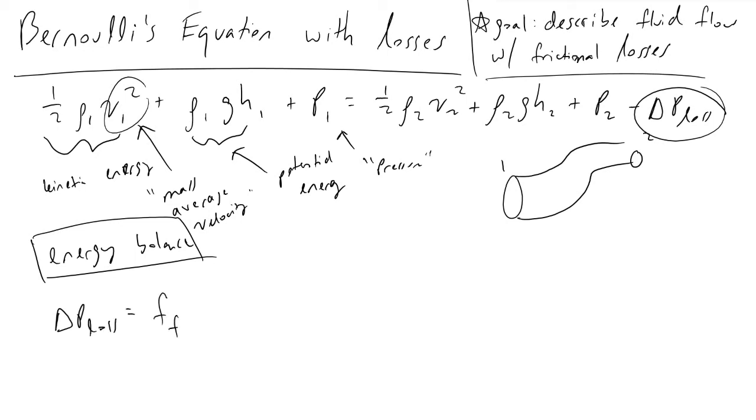Which is a number that is a function of Reynolds number as well as the pipe material, and we're going to multiply that by the length of the pipe divided by the diameter of the pipe, so length over diameter. And then we're going to multiply this by one half times rho of the fluid times the mass average velocity squared.